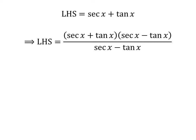So, let us multiply the numerator and the denominator by secant of x minus tangent of x. In the numerator, secant of x plus tangent of x times secant of x minus tangent of x is equal to square of secant of x minus square of tangent of x.